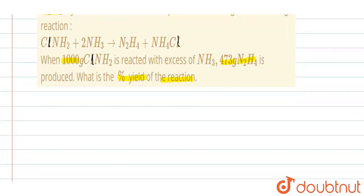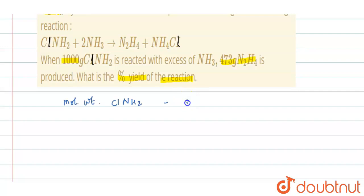First of all, let us calculate the molecular weight of ClNH2. Cl is 35.5, nitrogen is 14, hydrogen is 1 and there are 2 atoms. So when you add these, you get the answer 51.5.